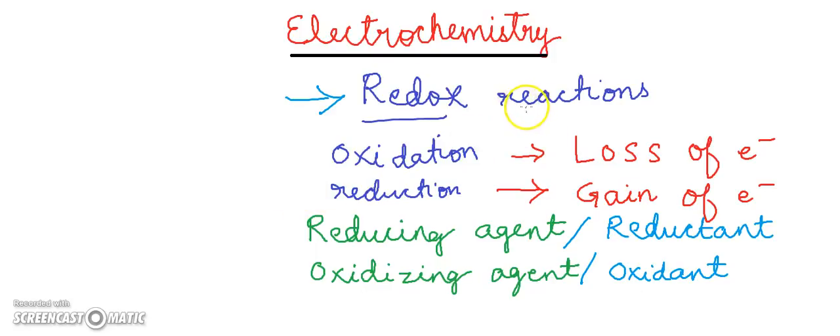The basis of electrochemistry are the redox reactions. Redox reactions are the reactions which involve oxidation as well as reduction. Oxidation is the loss of electron, reduction is the gain of electron. In the oxidation reaction the substance gets its electrons lost. In the reduction reaction the substance gains the electrons. The substance which gets oxidized is the reducing agent, and the substance which gets reduced is the oxidizing agent.